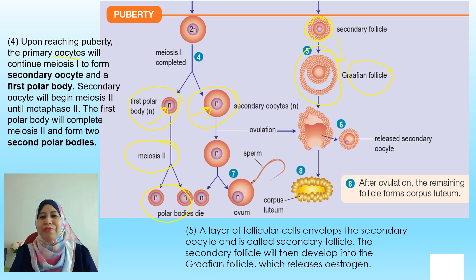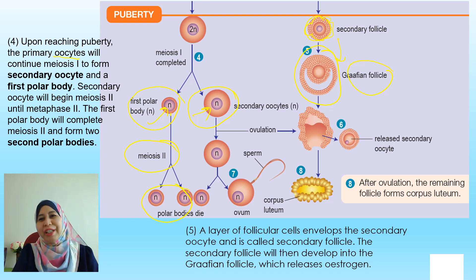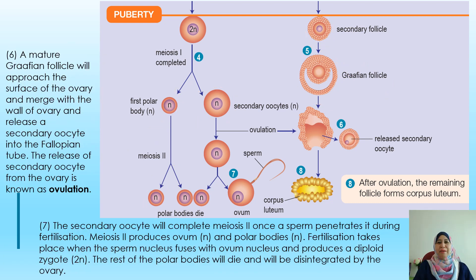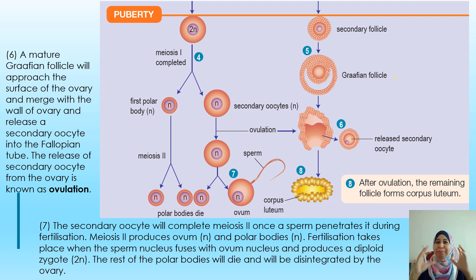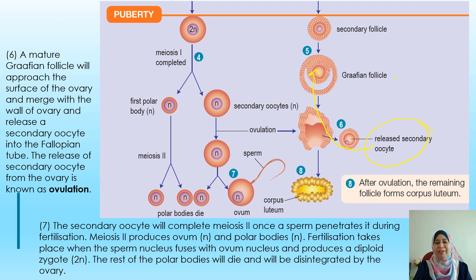The graafian follicle will help to release the hormone estrogen. A mature graafian follicle will then approach the surface of the ovary and merge with the wall of the ovary to release the secondary oocyte. The release of the secondary oocyte from the ovary is known as ovulation.